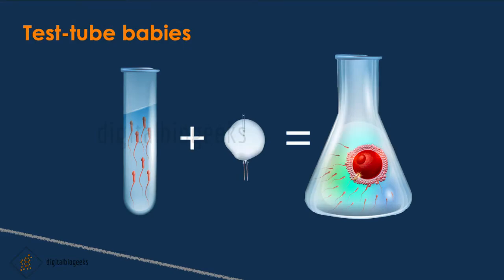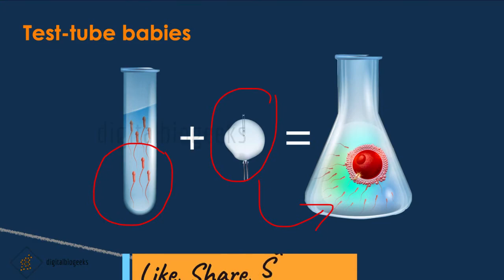In some females the oviduct is blocked, so fertilization won't take place. In that case, doctors collect the egg from the female and sperm from the male, and they are allowed to fertilize outside the body. The zygote formed is allowed to develop for one week, then placed in the mother's uterus, where further development of the baby takes place. Babies born through this technique are called test tube babies.